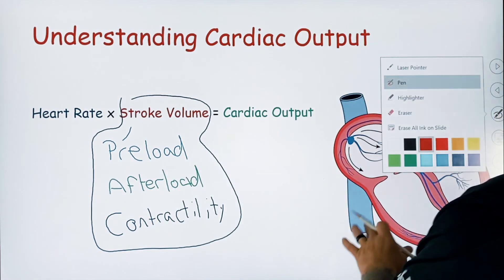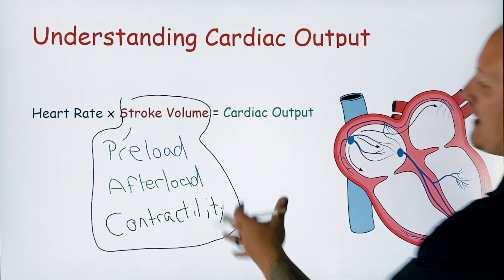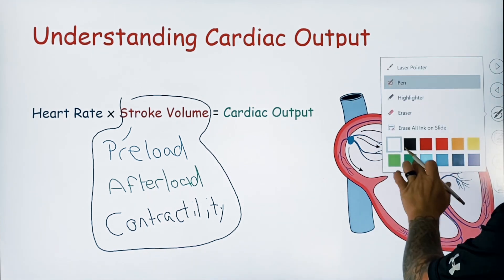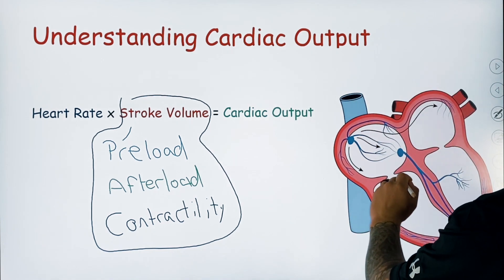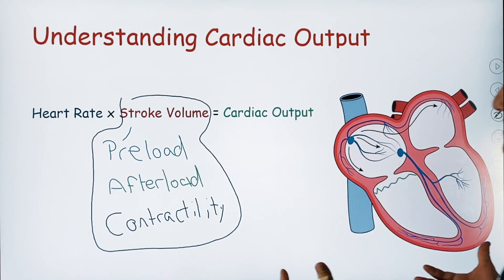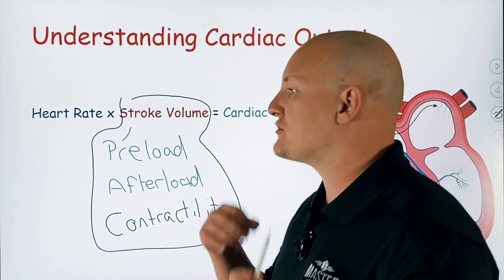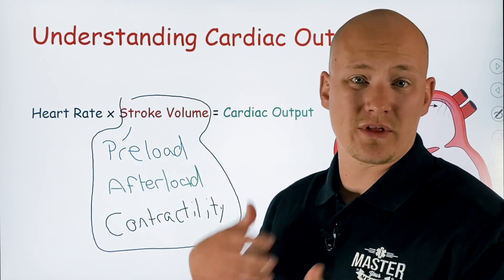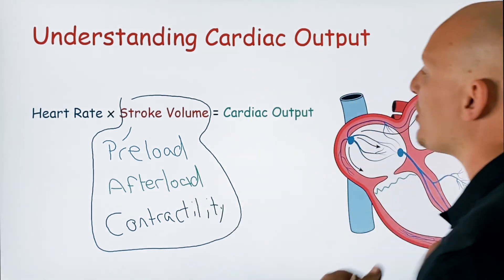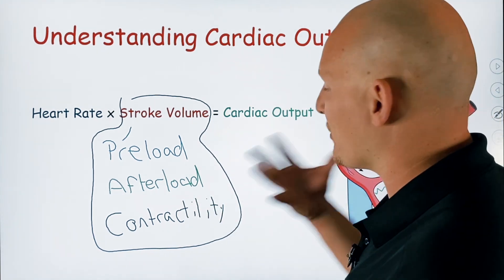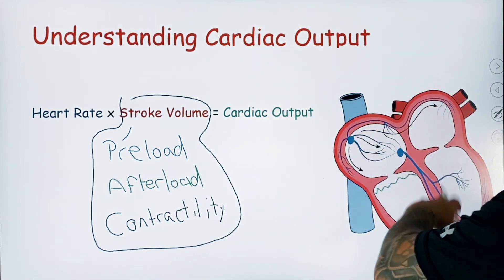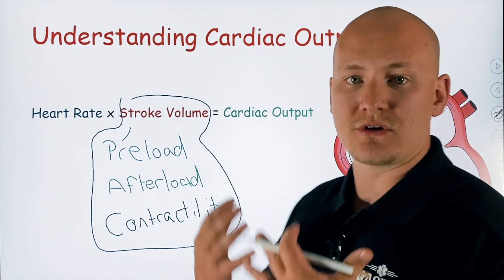Preload is a little bit easier to understand. Preload is all about the amount of fluid that is in your ventricle prior to contraction. Things like atrial contraction — for example, AFib where they have poor atrial contraction — they would have decreased preload. People that have poor volume, so hypovolemia, would have poor fluid returning back to those ventricles because they have a decreased blood volume.